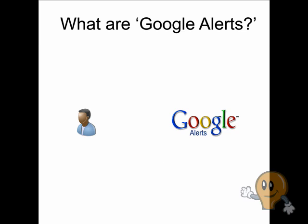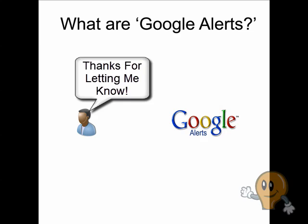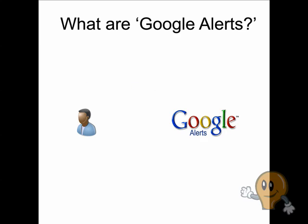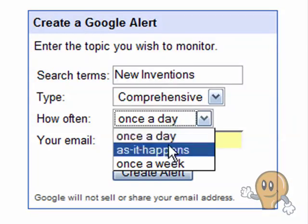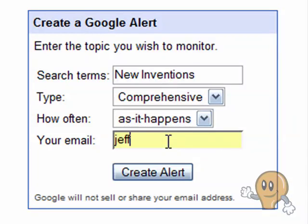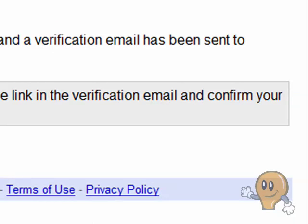So what are Google Alerts meant for? Google Alerts are automated email messages sent from Google to anyone who has registered for a particular term or subject, informing them of a new result on that term or subject. For example, if you register at Google Alerts requesting them to send you alerts about new inventions, every time Google finds and indexes a new page about new inventions, Google sends you an email with the website address and a short description.